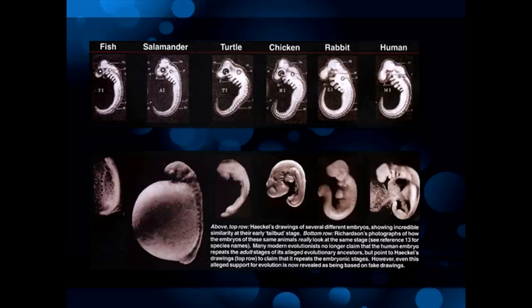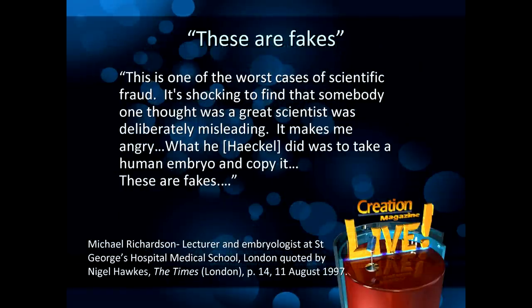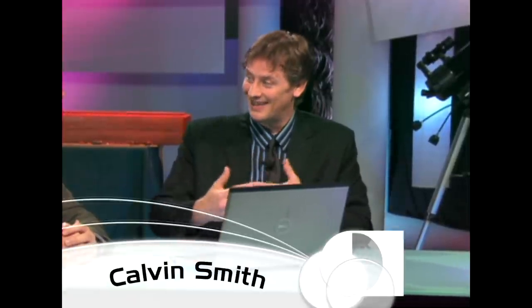Michael Richardson, an evolutionist himself, said: 'This is one of the worst cases of scientific fraud. It's shocking to find that someone once thought to be a great scientist was deliberately misleading. It makes me angry. What Haeckel did was to take a human embryo and copy it. These are fakes.' This was a huge embarrassment. But lately there's been an evolutionist trying to rehabilitate Haeckel's theories — some revisionist history happening around the science.